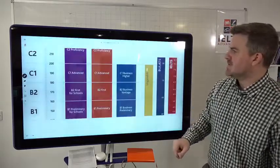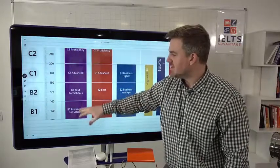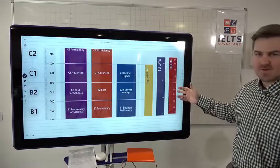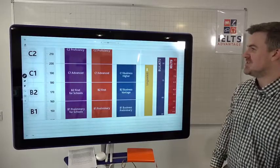So some of these words are around here, advanced, proficient. And some of these words are here, B1, B2. So down band 4, 4.5, 5, 5.5, 6, the bands you probably don't want to get.